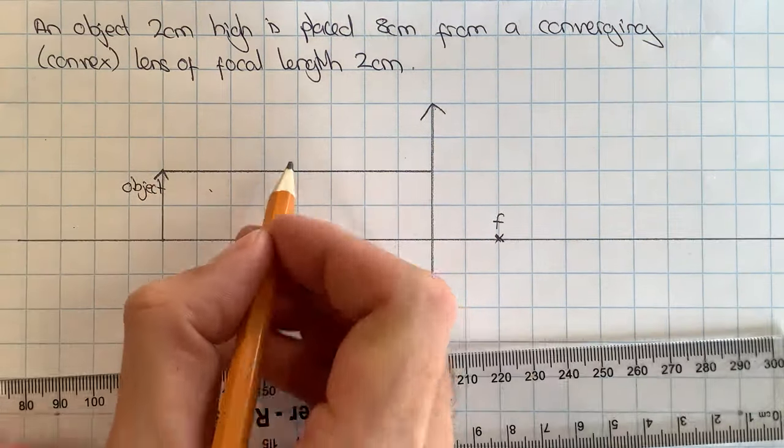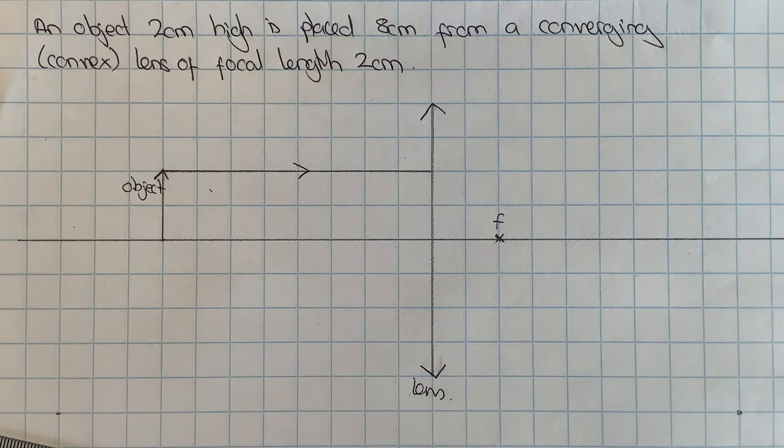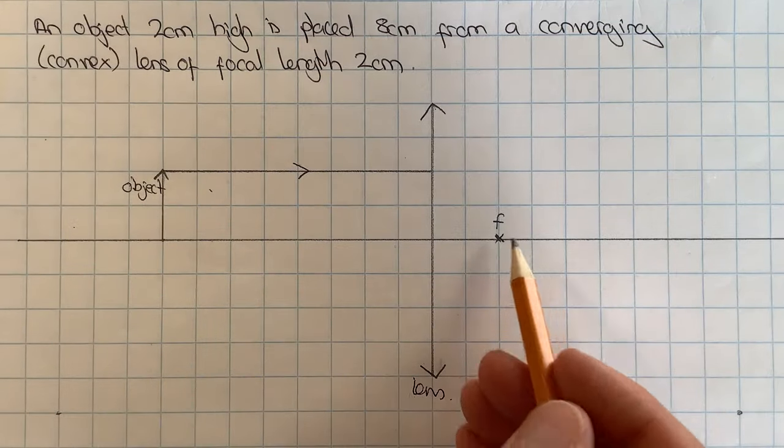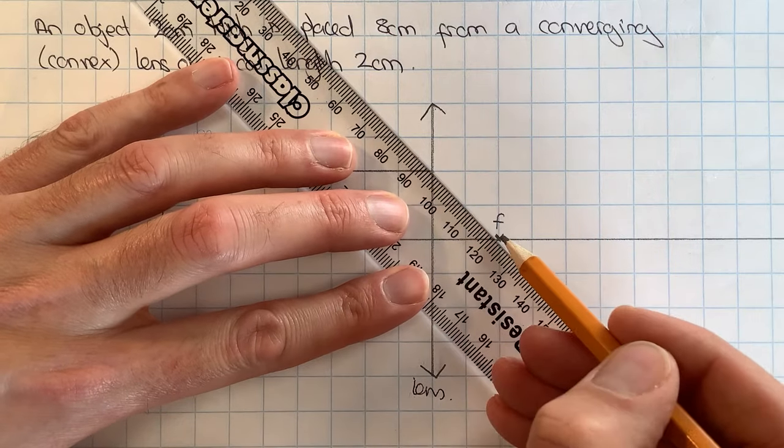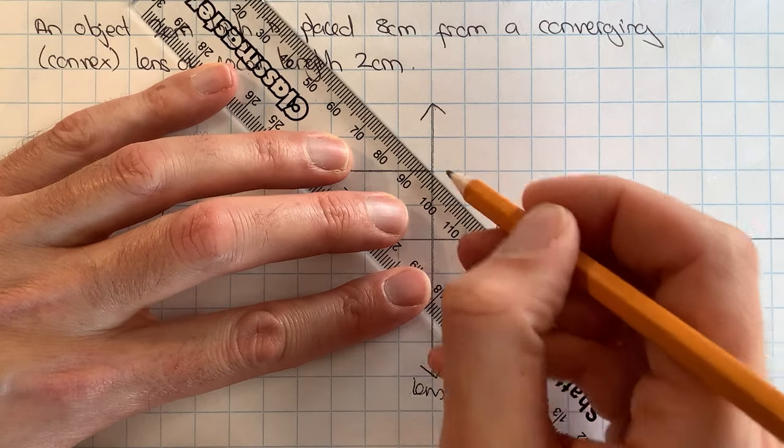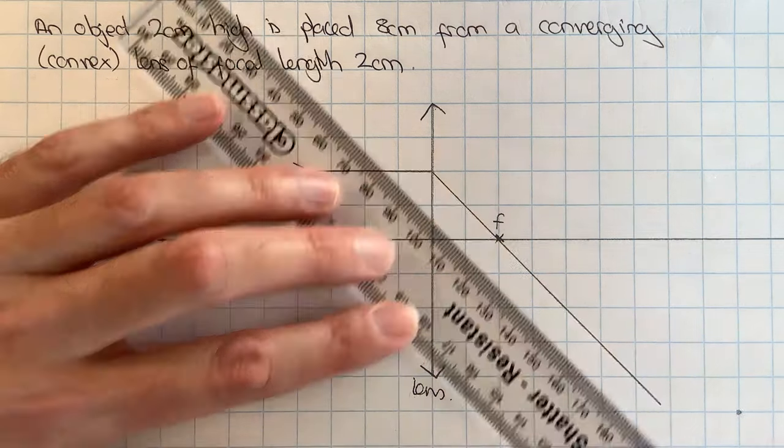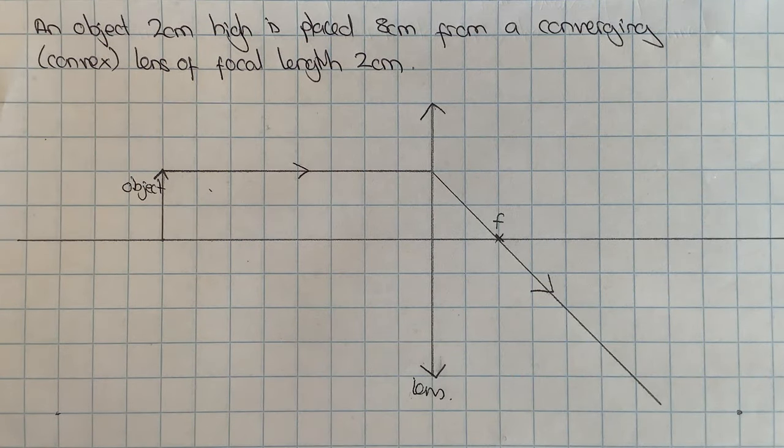So that's my first special ray, and this special ray when it goes through the converging lens will refract so that it passes through the focus of the lens here. So I now need to line up my ruler with where the ray hit the lens and the focus here and draw in a solid line like that, and I'm putting arrows on these to show that is what the real light ray does. So that's my first special ray drawn in.